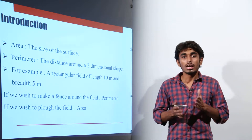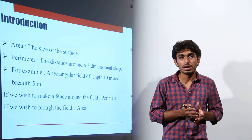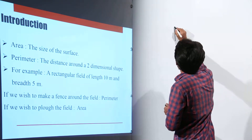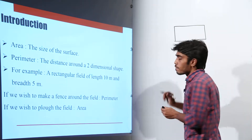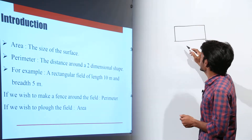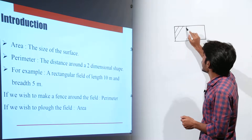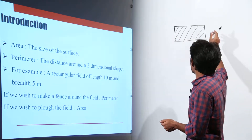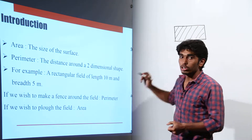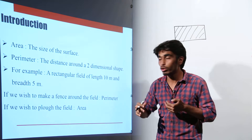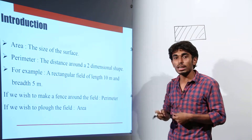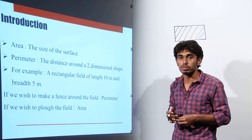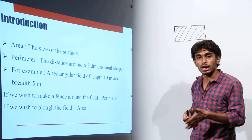Let's start with the basic definition of area. Area is the size of the surface. Suppose we draw a rectangular field — a cow or bullock has to plow it. When we talk about perimeter, it means the boundary across a 2D shape. So when we want to build a fence around the field, we talk about perimeter. When we want to find how much area needs to be plowed, or how much wall needs to be painted, we talk about area.